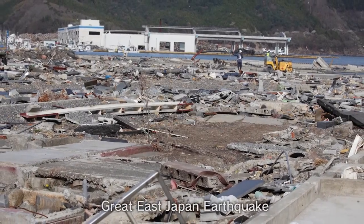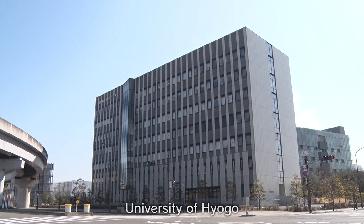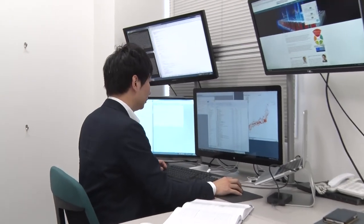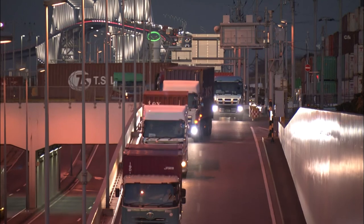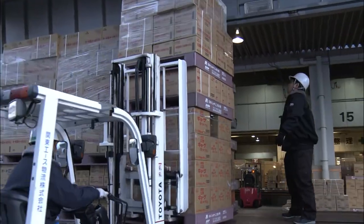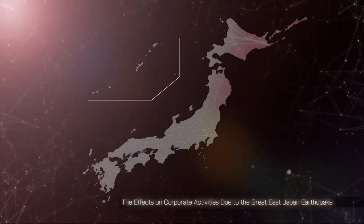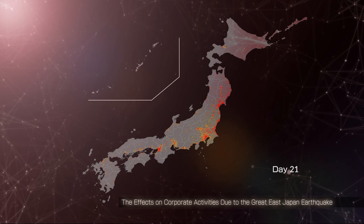Another important aspect related to disasters is the damage propagated through the economy. Associate Professor Hiroyasu Inoue at the University of Hyogo has utilized data from approximately 1 million companies and their 5 million transactions to simulate how disruptions triggered by the Great East Japan earthquake spread through corporate activities. Companies within the four prefectures closest to the epicenter are heavily affected first, and then through supply chains, disruptions in production propagate — day by day, we can see an increase in affected companies, indicated by red dots, spread across the country.